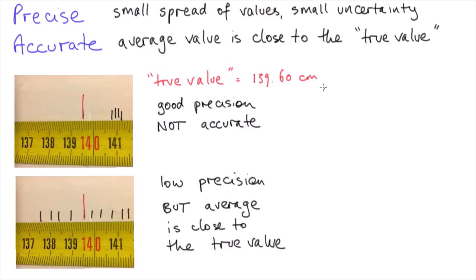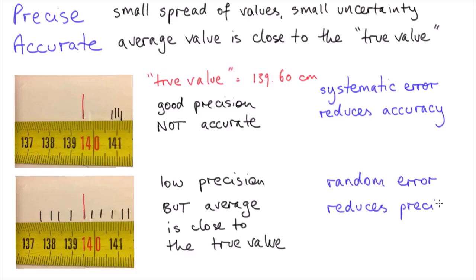Now you might notice that accuracy and precision are closely related to the presence of systematic and random errors. An experimental setup that has significant systematic error won't give accurate results, and similarly large variations in measurements due to random error will mean the results are not precise.